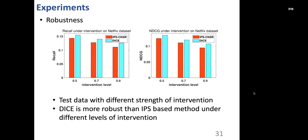For robustness, we evaluate the performance on test data with different strengths of intervention, and we can observe that DICE is more robust than IPS-based methods under different levels of intervention.